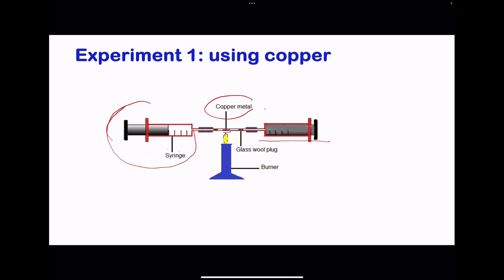Then we'll position our copper metal in the middle piece, and we will heat it strongly using a burner. Then the plunger on this side is going to be pushed in. Remember the copper metal is heated at high temperature, and now you're pushing air to go past the heated metal. So, it means copper is going to react with the oxygen in the air to produce an oxide of copper.